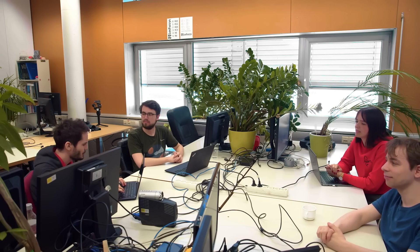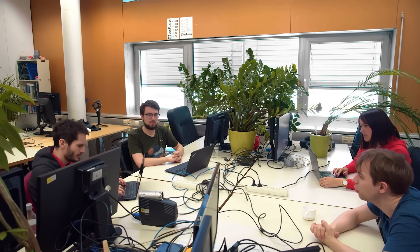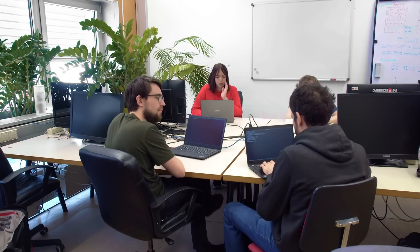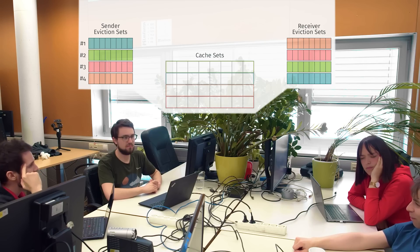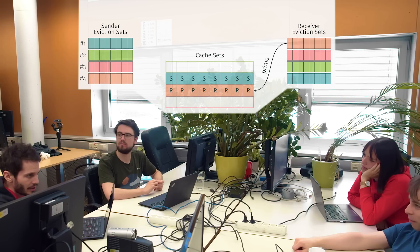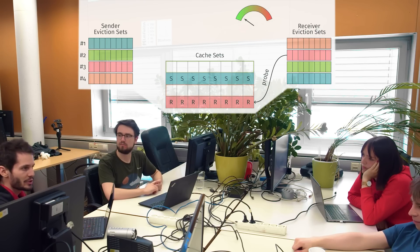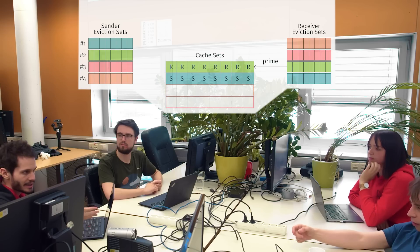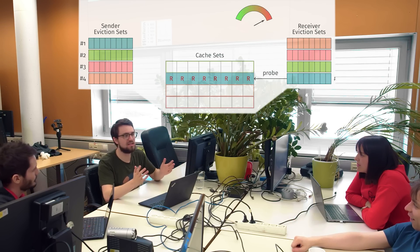There was one more thing I wanted to try: prime-and-probe across virtual machines. But which cache set do you attack? We already thought about this — you can just search for all of them, basically template the cache. And especially for a cache covert channel, that would be easy. The sender jams one set with eviction the entire time, and the receiver probes through the sets as part of their prime-probe attack. And if they jam the same cache set, they both see it in their timings.